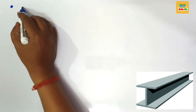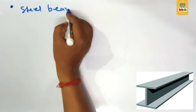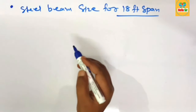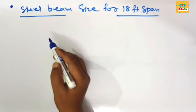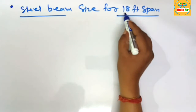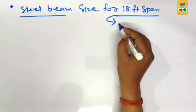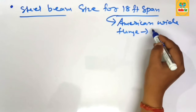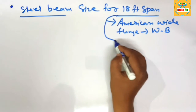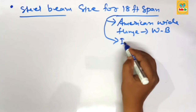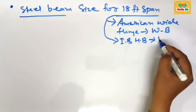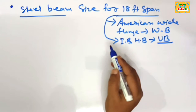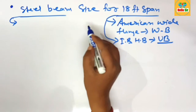Today in this video we will learn about steel beam size for an 18-foot span. You have a span length of about 18 feet and the type of beam is a steel beam. The question is: what size steel beam is required for an 18-foot span? Steel beam is also known as American Wide Flange beam, denoted by W beam, and its cross-section looks like an I-beam or H-beam.